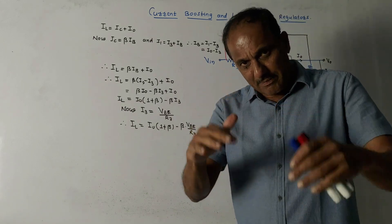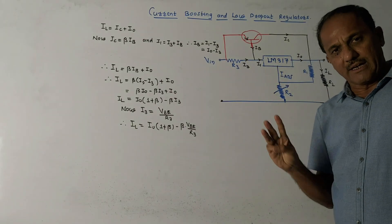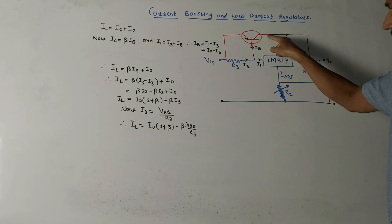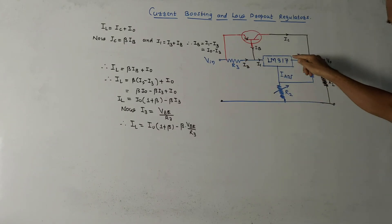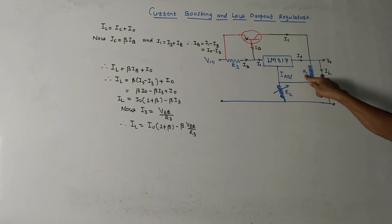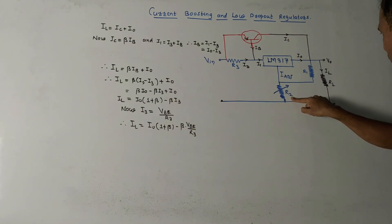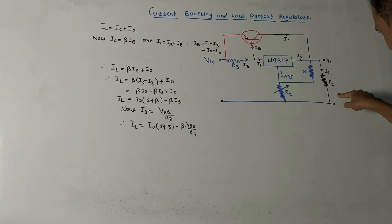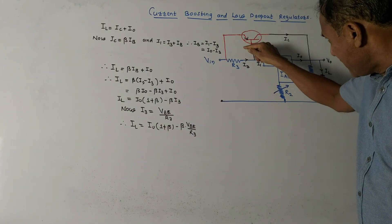As the name indicates, current boosting means to increase current. We are talking about LM317, which is a three-terminal IC regulator. There is a PNP transistor used to boost or increase the current. The remaining diagram includes LM317, resistor R1 with standard value 240 ohms, variable resistor R2, and load resistance RL. Current passing through load resistance is denoted by IL.